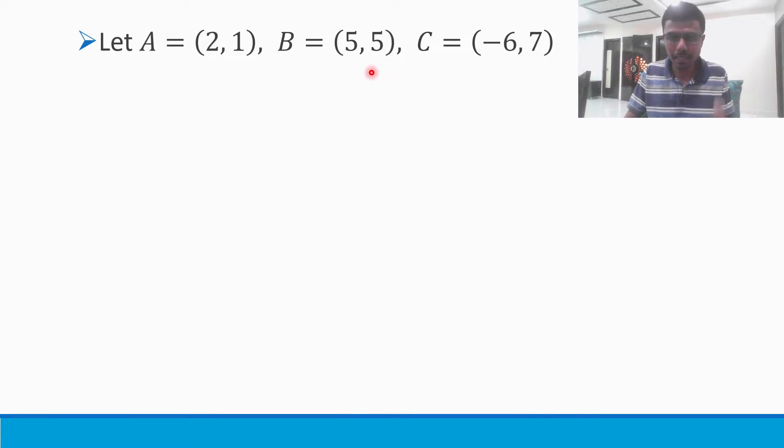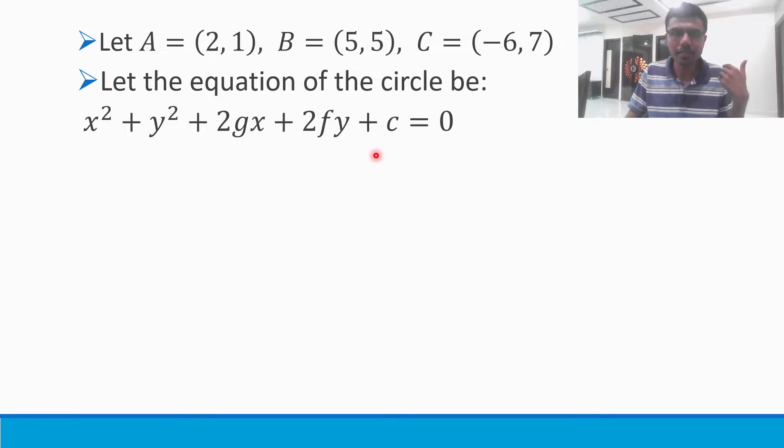So I am taking the first point as A, second point as B and third point as C, and the equation of circle I am taking as x² + y² + 2gx + 2fy + c = 0, standard form of circle.